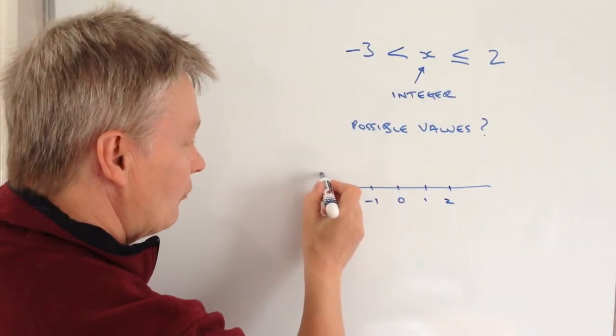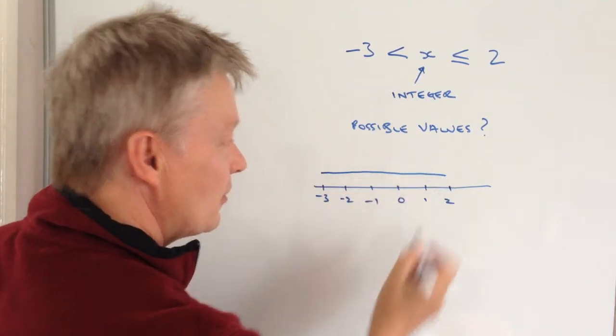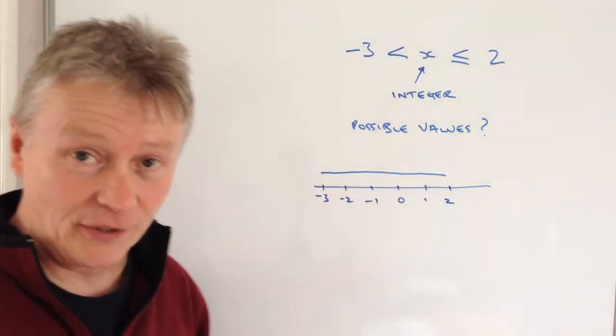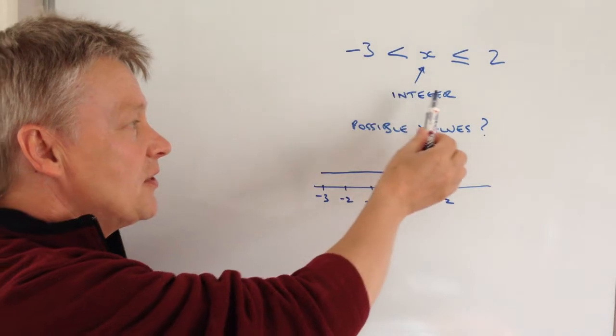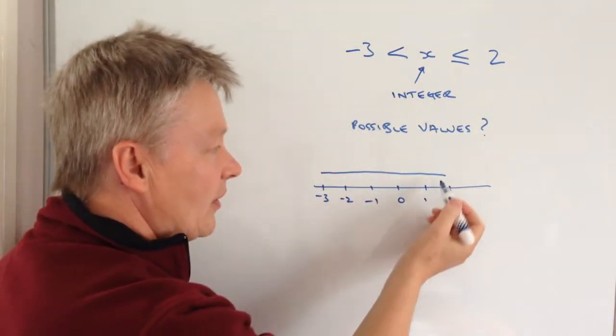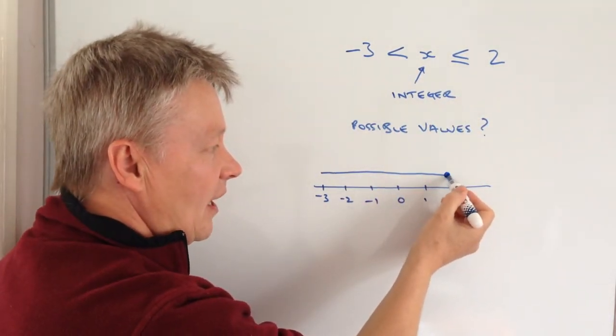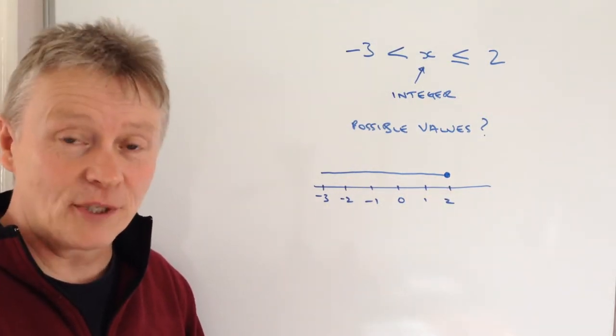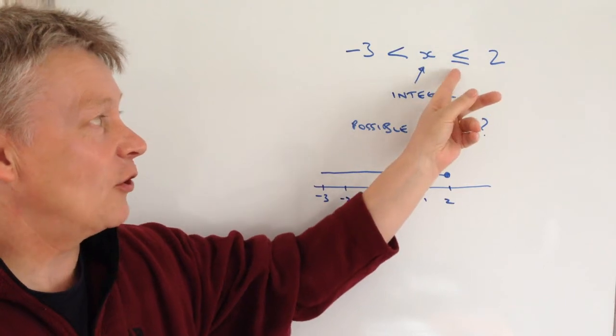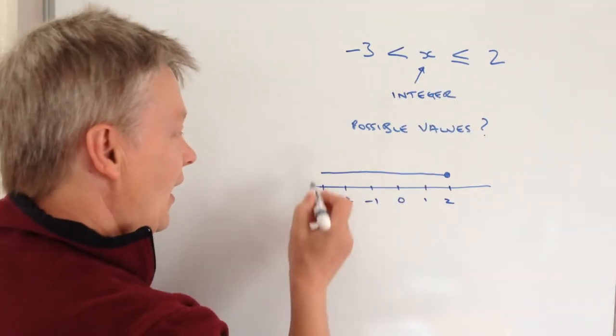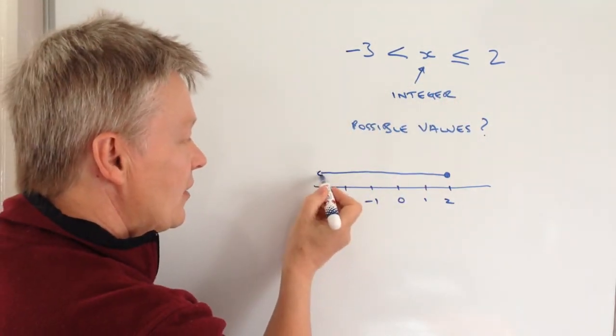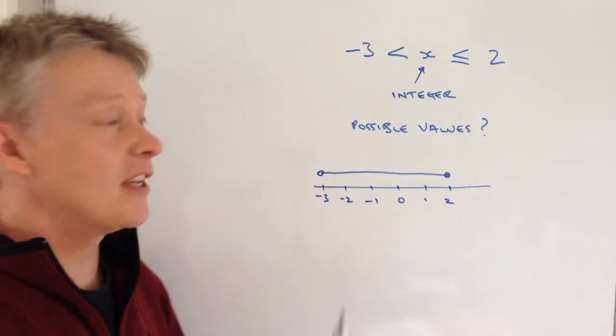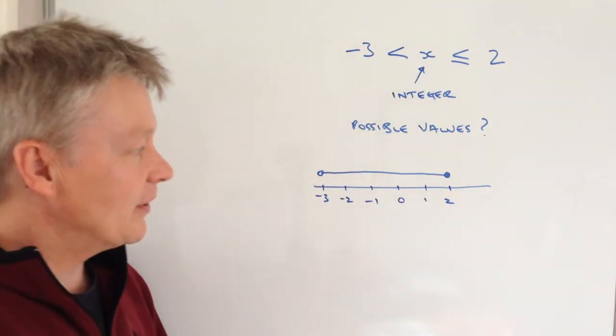If I draw a line that represents this inequality between the two values, it stops at 2 because it equals 2. We generally fill this in—make a little circle at the end and fill it in, which means it's less than or equal to 2. At the other end, we leave this open to indicate that it's greater than -3.